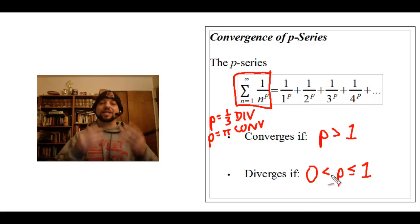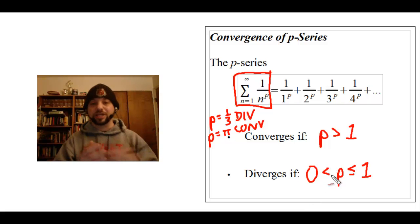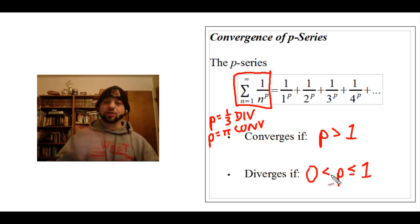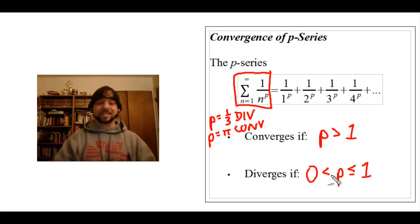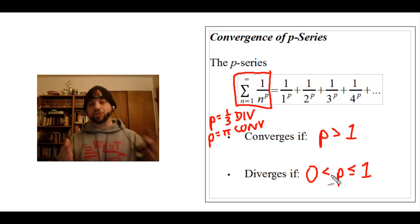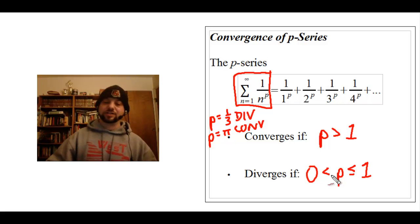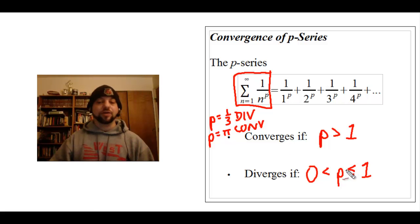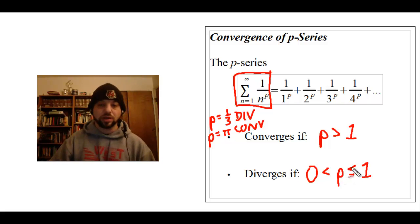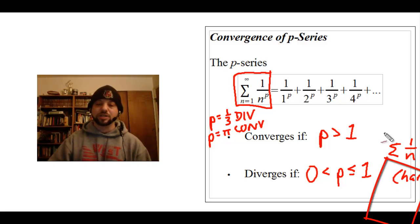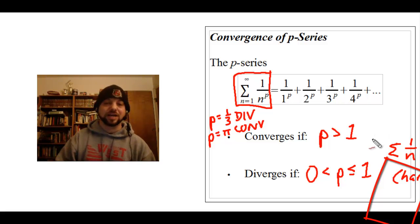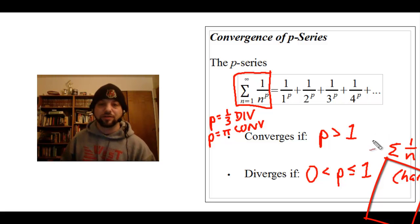You could graph a few different p-series — some with p greater than one, some with p less than or equal to one — and you'll see that some approach the asymptote much faster than others. Be very careful when p equals one. In other words, if we have the series 1 over n, which we call the harmonic series, that series does in fact diverge.